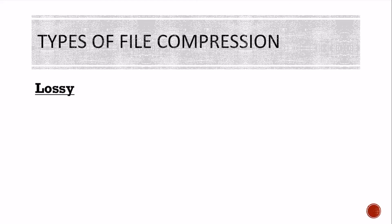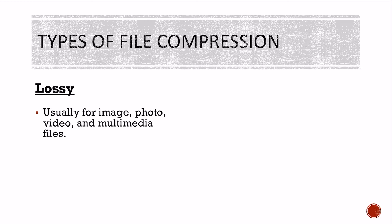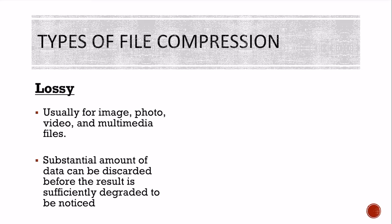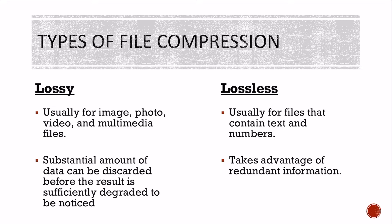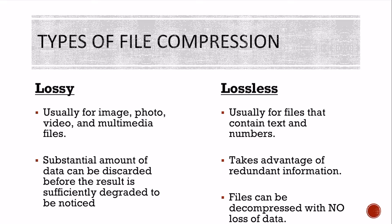There are different types of file compression. The first is lossy, usually used for images, photos, videos, and multimedia files. A substantial amount of data can be discarded before the result is sufficiently degraded to be noticed — a lot of the lossy data can be removed and the normal person's eyes won't notice anyway. Lossless compression is for files that contain text and numbers. It takes advantage of redundant information — going through, removing redundant data, then compressing it. Files can be decompressed with no loss of data, and files containing text and numbers are very small compared to image, photo, or video files.